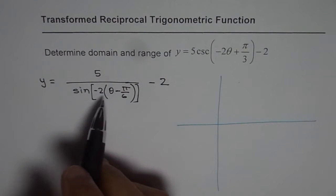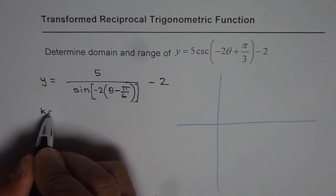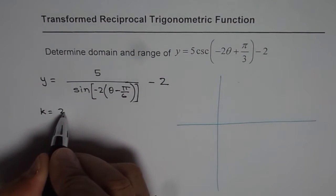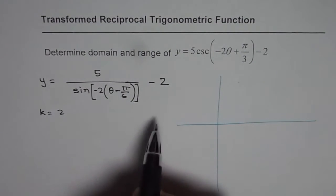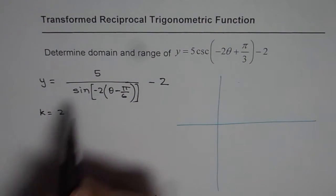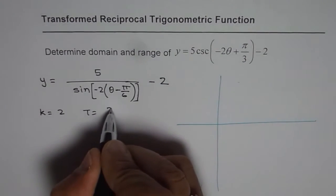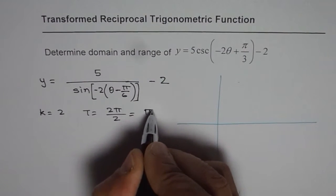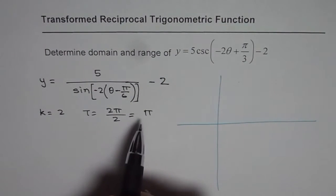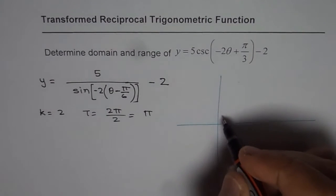In this equation, the value of k is 2 — the minus really means it is reflected, which we will see while sketching. The time period t is 2 pi divided by 2, that is pi. So everything repeats after pi. Let's consider the sine function itself first.